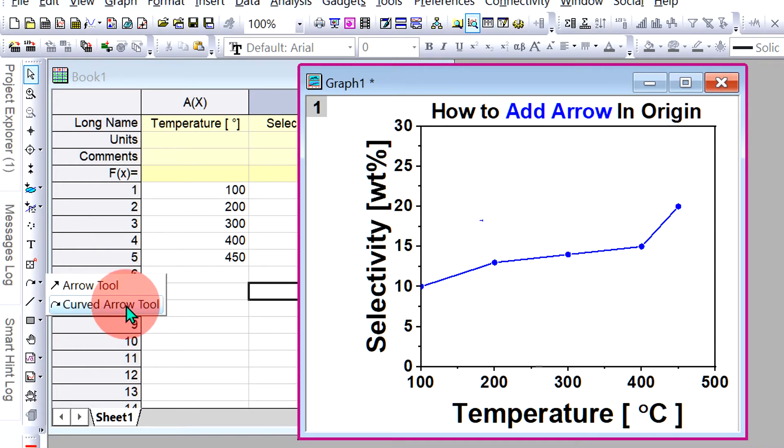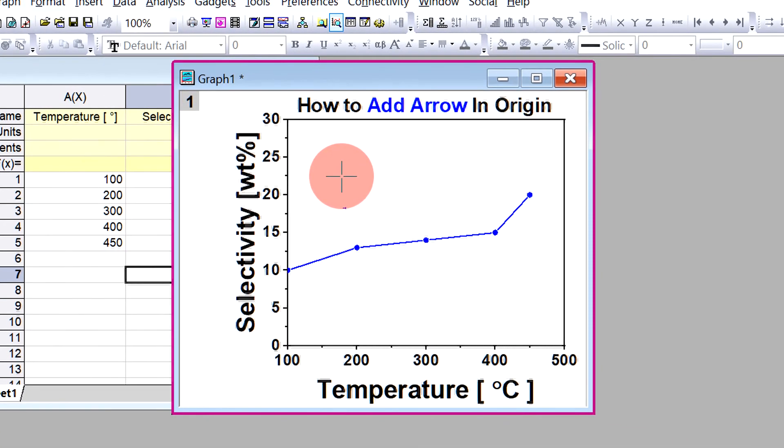Later I will show how to draw a curve arrow. After selecting the arrow tool press shift on your keyboard and then draw the arrow.